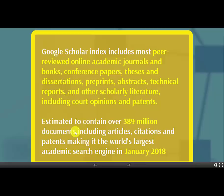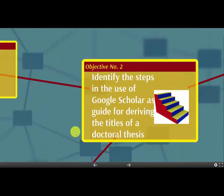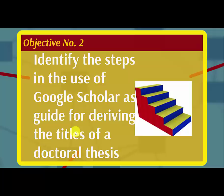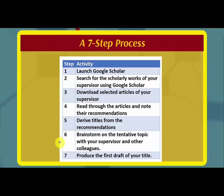We now go to objective number two — the steps in the use of Google Scholar to guide the derivation of the title of your doctoral thesis. My dear students, there are seven steps.